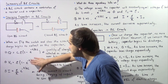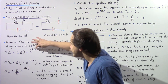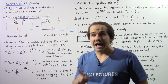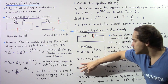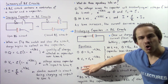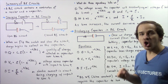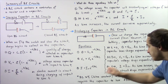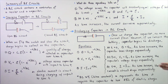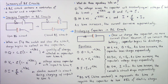Notice all these equations have the same RC term. We usually define RC in terms of the Greek letter Tau. Tau is simply known as the time constant, and it represents the time it takes for the capacitor to lose or gain 63% of its electric charge.